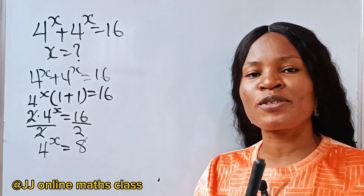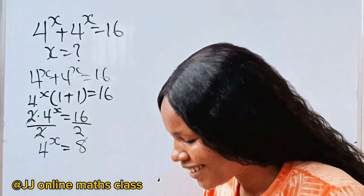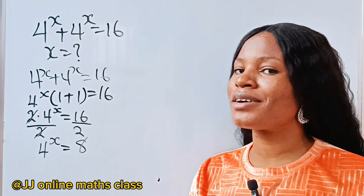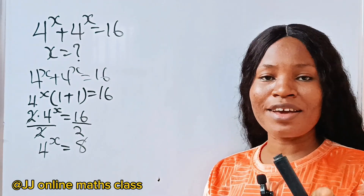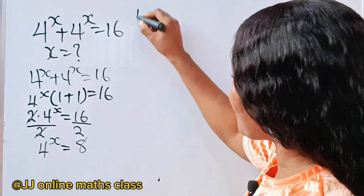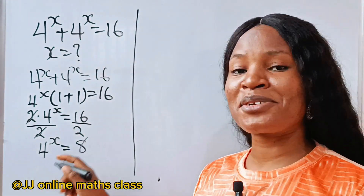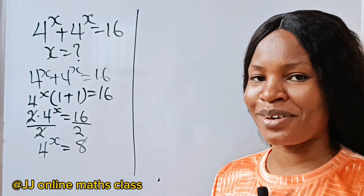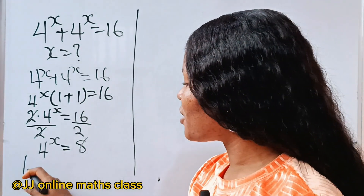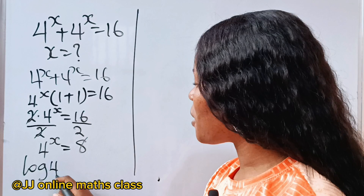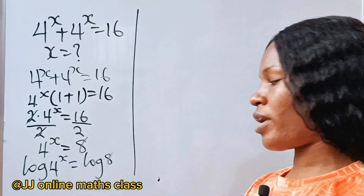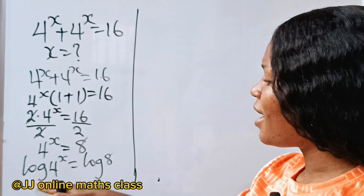This is where the whole twist starts. But before that, click on the subscription button and the notification bell if this is the first time you've seen this. Now let's continue. We are going to introduce log to both sides of the equation — just having fun! So we get: log of 4 to the power of x is equal to log 8.